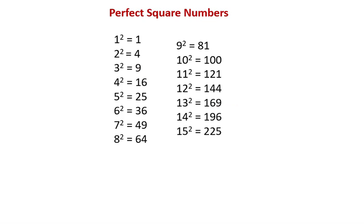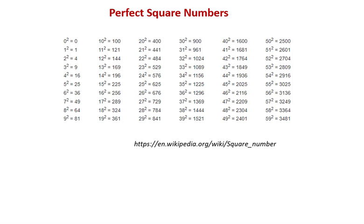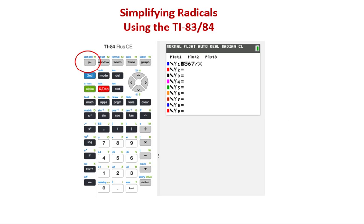You can learn to recognize perfect square factors by becoming familiar with the sequence of squares. But what happens when the numbers get a little bigger? Here are more examples: radical 80 can be simplified as 4 radical 5, and radical 52 simplifies to 2 radical 13. But what happens when you get an expression with a larger radicand? For help, you can search the internet for a longer list of perfect squares, but I found a way to use your graphing calculator to help.